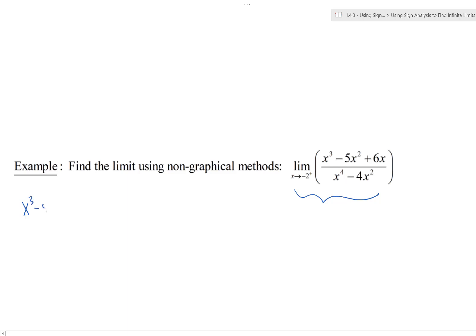Let's factor x cubed minus 5x squared plus 6x. Notice there's a common factor of x, so we take that out and we're left with x squared minus 5x plus 6, which factors further as x times x minus 3 times x minus 2. So if the numerator equals zero, then x must be 0, x must be 3, or x must be 2.